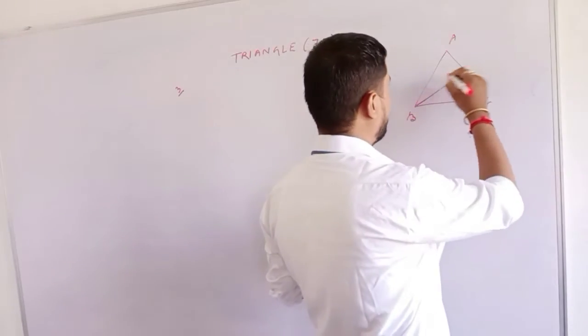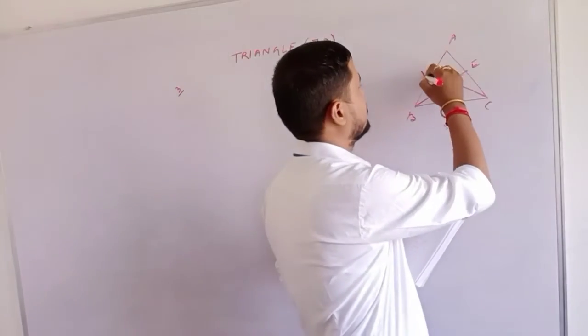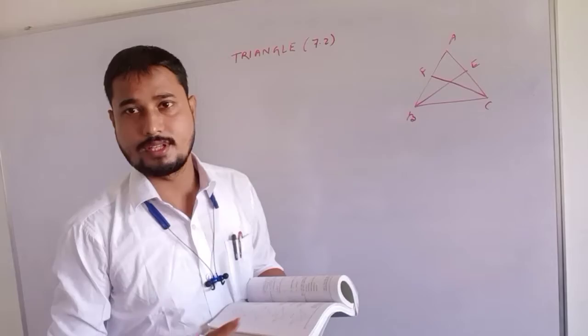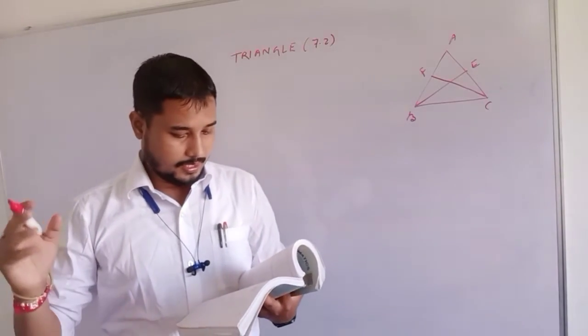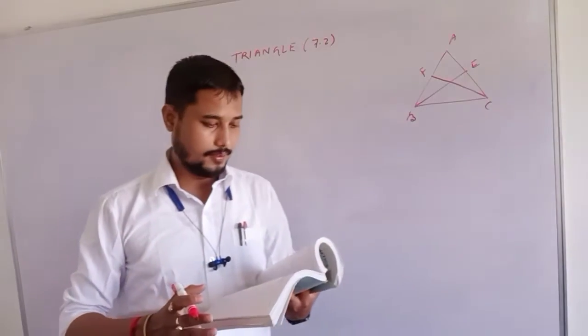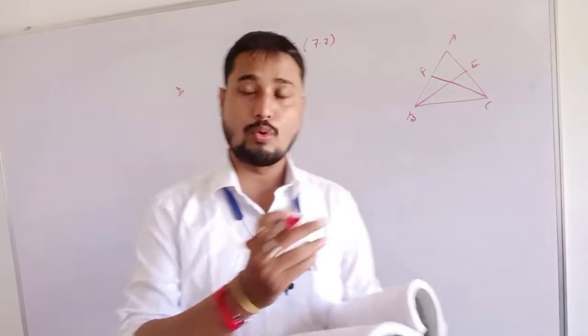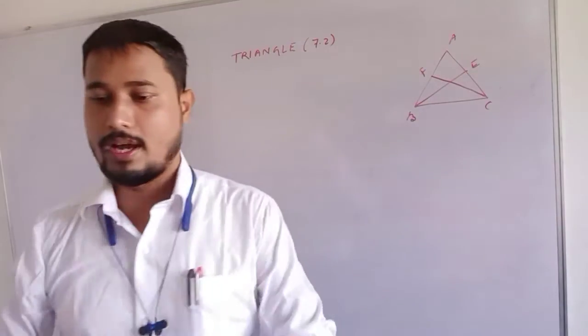In this isosceles triangle there are two altitudes. This is one altitude, there is another altitude BE and CF. There are two altitudes there - one is BE, another is CF. They are on equal sides AC and AB respectively. To prove these two altitudes are equal, that is BE and CF are equal.